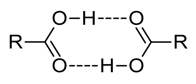Borane occurs as the dimer diborane, due to the high Lewis acidity of the boron center. Excimers and exciplexes are excited structures with a short lifetime. For example, noble gases do not form stable dimers, but do form the excimers R2**, Kr2** and Xe2** under high pressure and electrical stimulation.